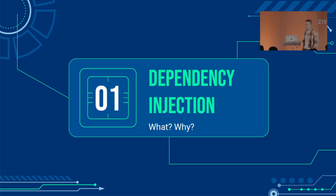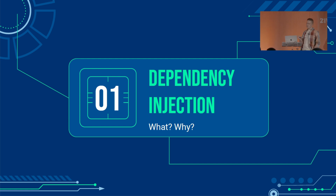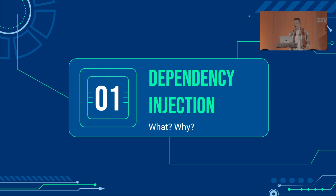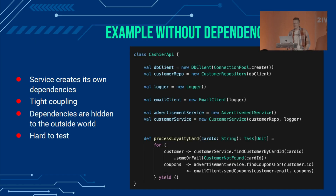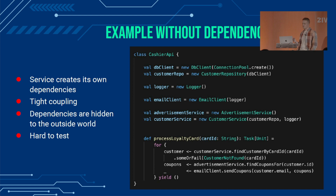When we talk about dependency injection, we are trying to solve two different problems. One problem is how do we propagate our dependencies through our application, and the other is how do we wire up our application graph at the edge of our program.